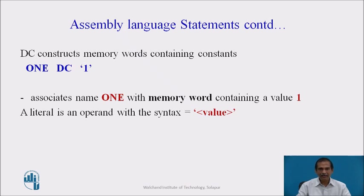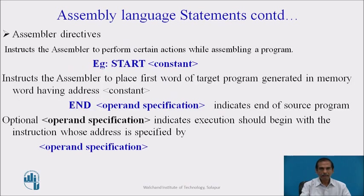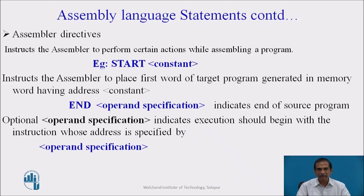A literal is an operand with a syntax value. Assembly language statements also consist of a third type: assembly directives. These statements instruct the assembler to perform certain actions while assembling a program. For example, 'START constant' instructs the assembler to place the first word of the target program at the memory address given by constant. 'END operand specification' indicates the end of the source program, and an optional operand specification indicates that execution should begin with the instruction whose address is specified by the operand specification.